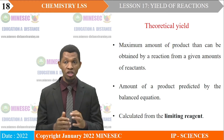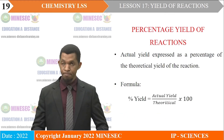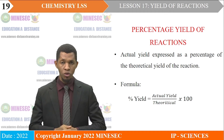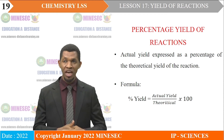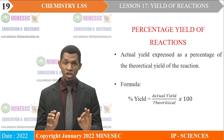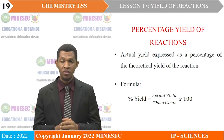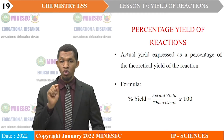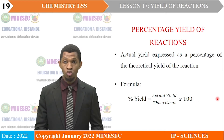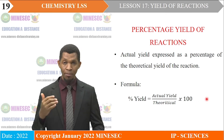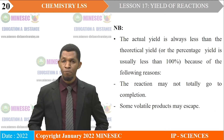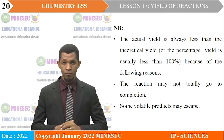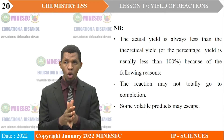Percentage yield of reactions: the percentage yield is the actual yield expressed as a percentage of the theoretical yield, calculated using the formula: percentage yield = (actual yield / theoretical yield) × 100. It is important to note that the actual yield is always less than the theoretical yield, so the percentage yield is always less than 100%.